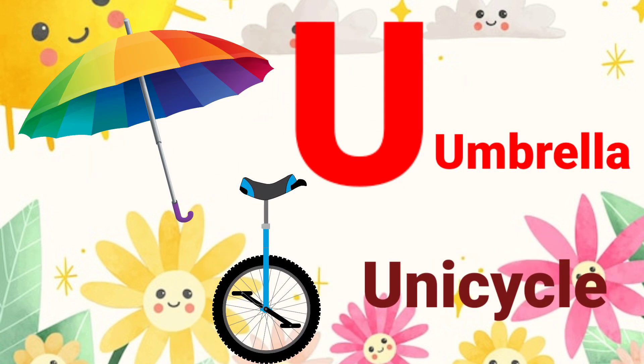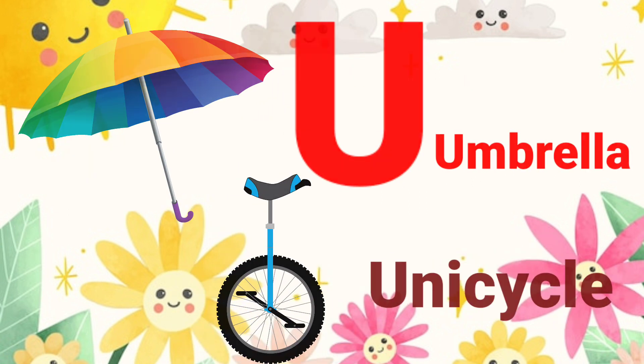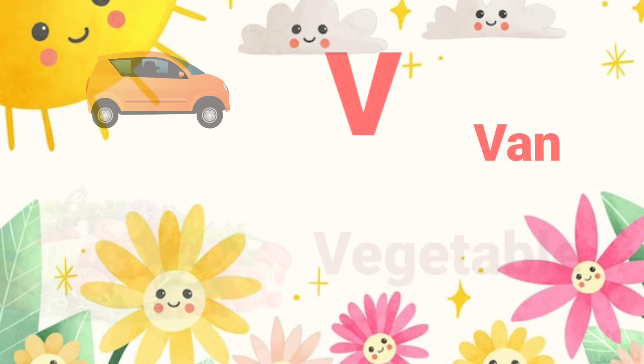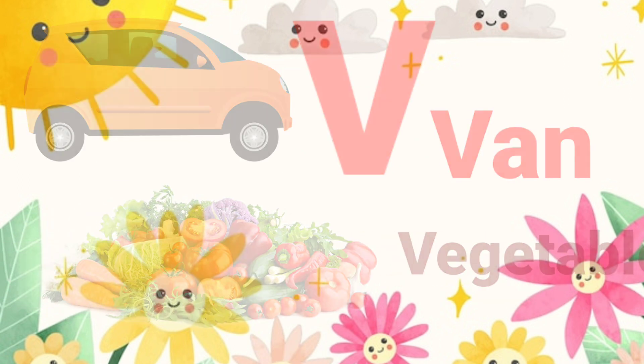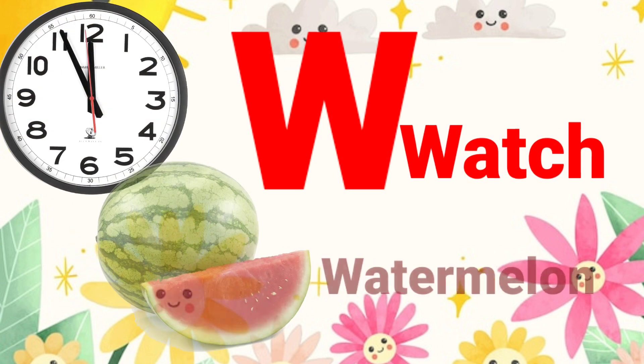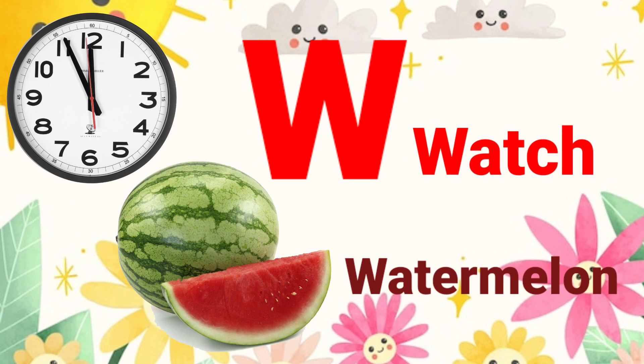U. U for Umbrella, U for Unishuckle. V for Van, V for Vegetable.